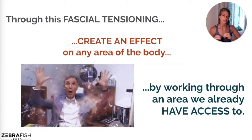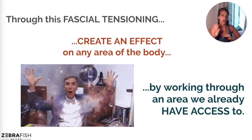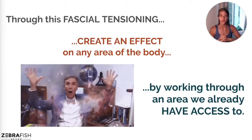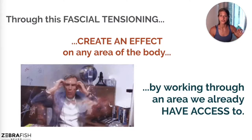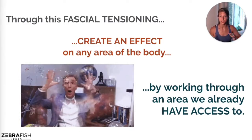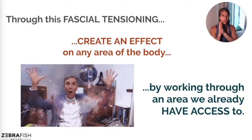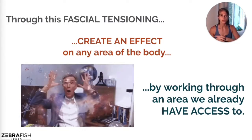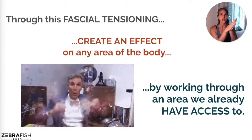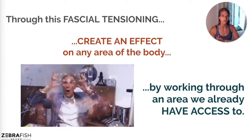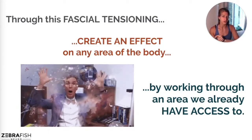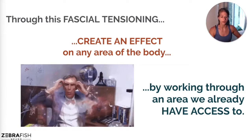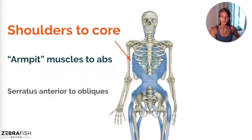According to Thomas Myers, there are seven fascial trains, and today I'm going to be talking about just one. The great thing about the one I'm discussing is that it actually overlaps with all of the other trains — so it's a good bang for your buck to start with.